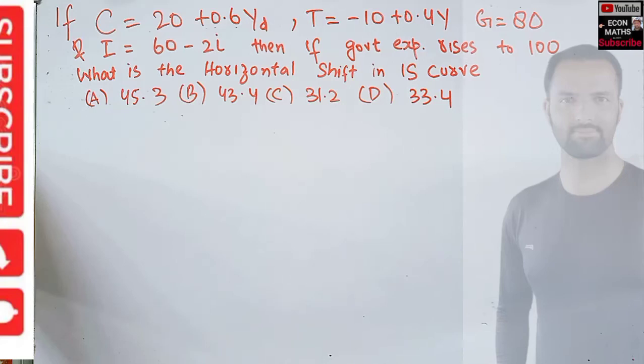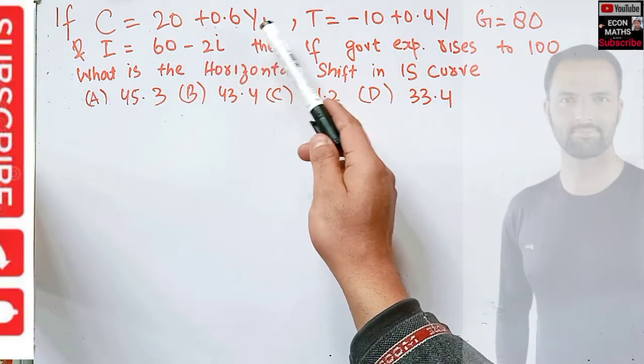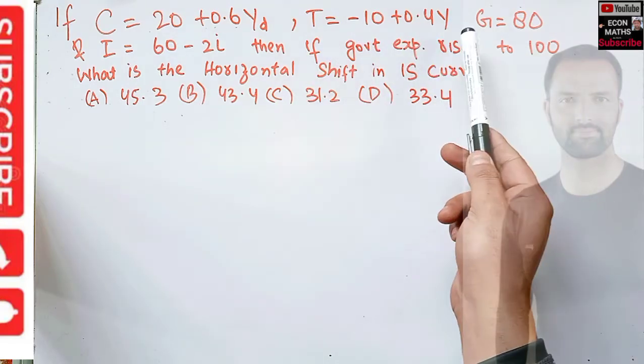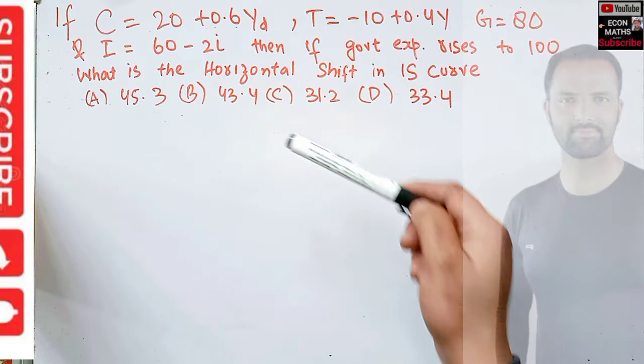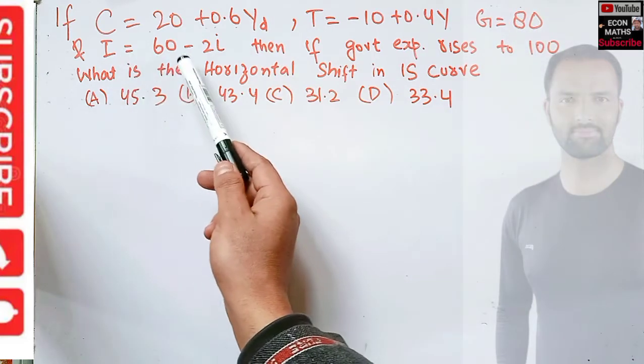In this video we will solve a problem on IS curve. The question gives us: consumption is C = 20 + 0.6Y_D where Y_D is disposable income, tax is T = -10 + 0.4Y, government expenditure is G = 80, and investment is I = 60 - 2i. This is induced investment that depends upon the rate of interest.